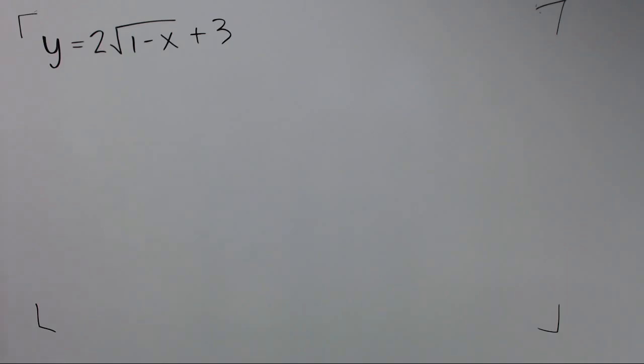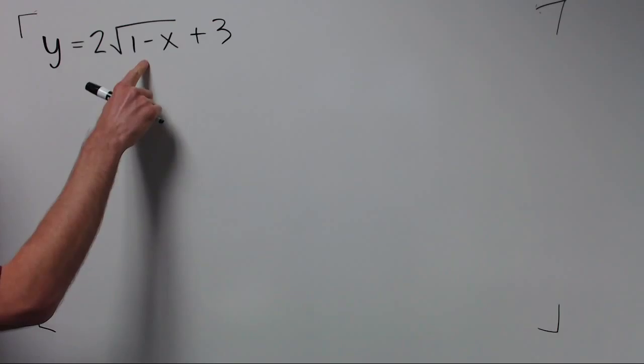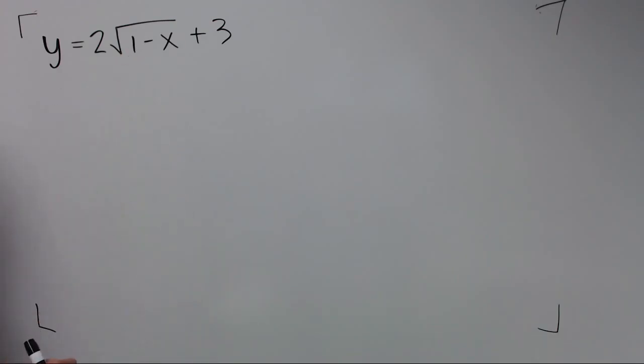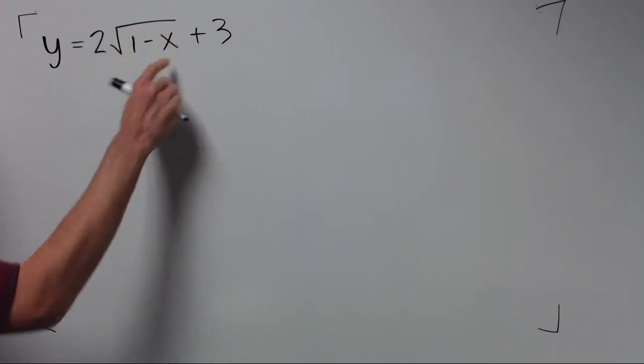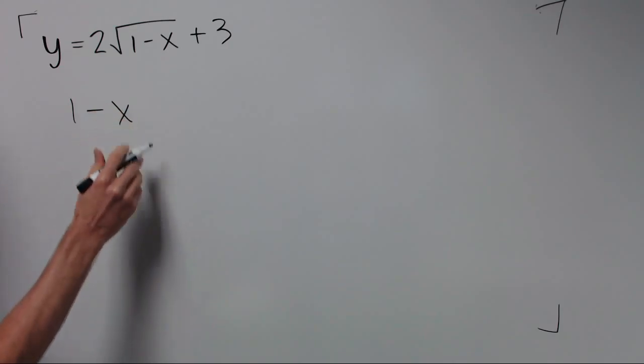The starting point for the graph is the most important starting point. How do we find the starting point from the equation? You want to find out when the square root is zero, and so we do that by setting the radicand equal to zero and solving. In this case the radicand is what's inside the square root, the 1 minus x.